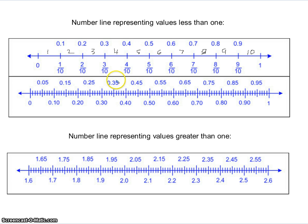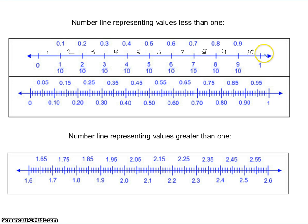What gets a little confusing is we think that we need 10 marks. And we do use 10 marks, not counting 0 — this being the first mark: 1, 2, 3, 4, 5, 6, 7, 8, 9, and then 10 represents our whole. This would be 10 tenths. So one whole is equal to 10 tenths.